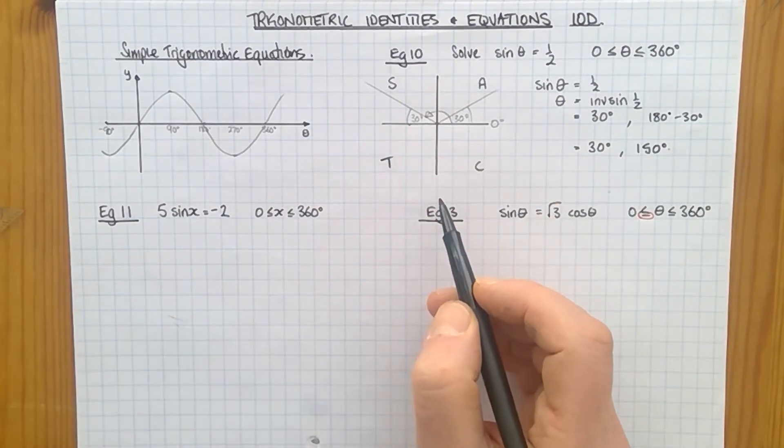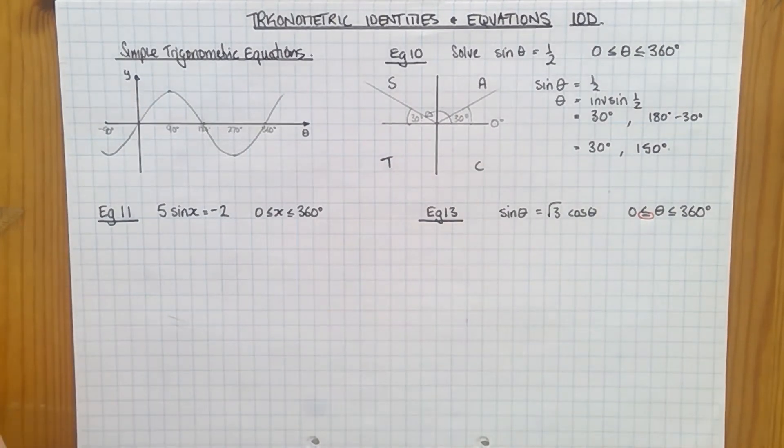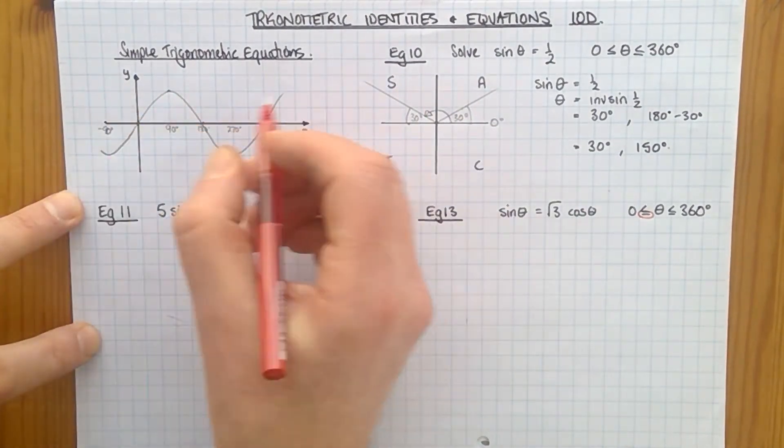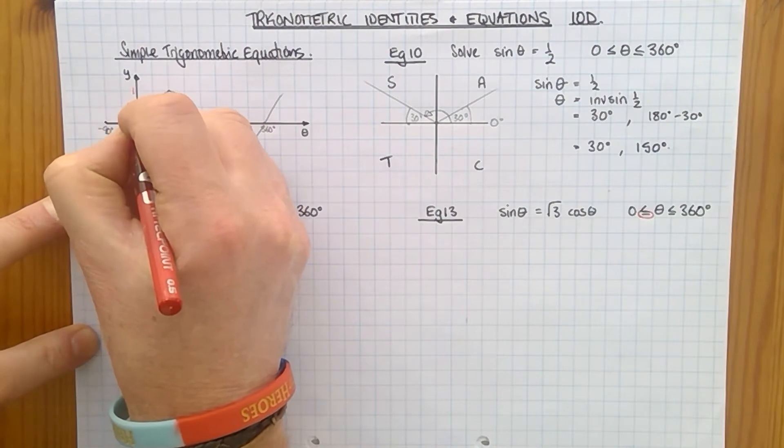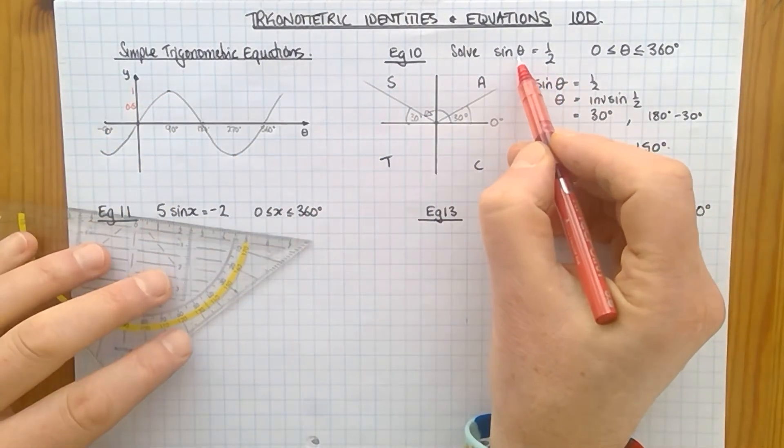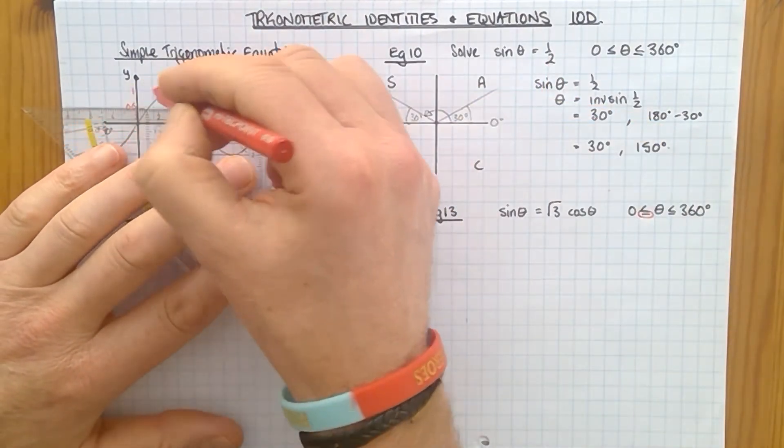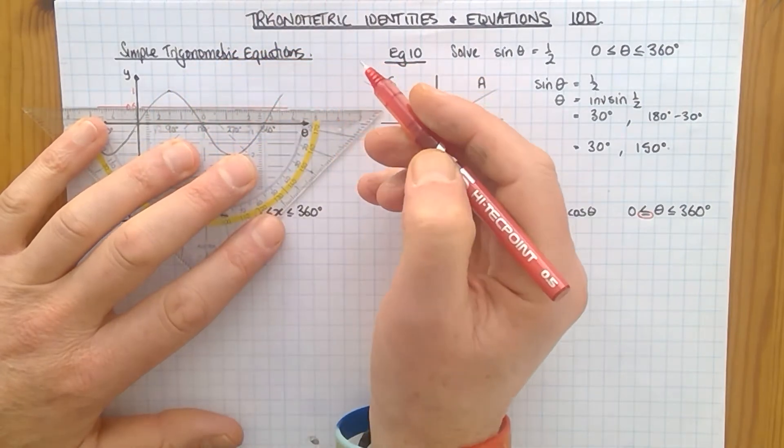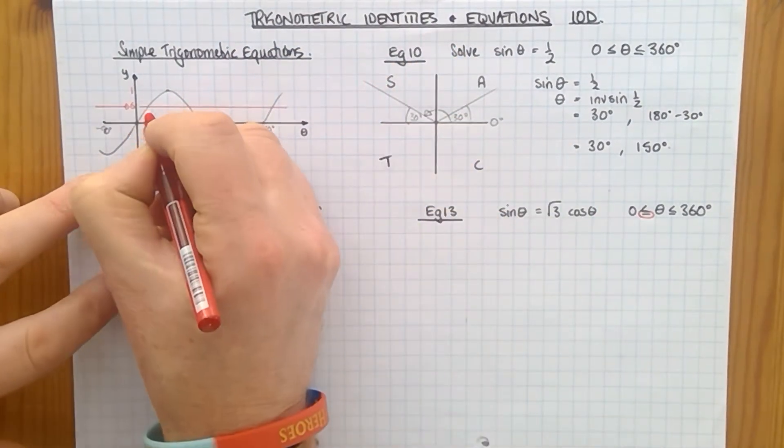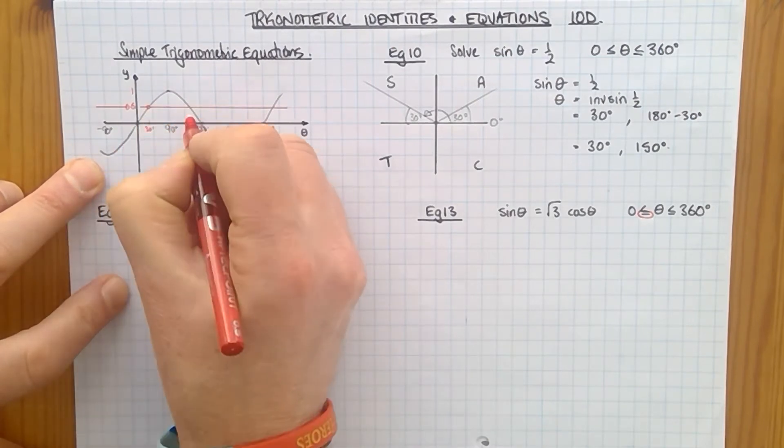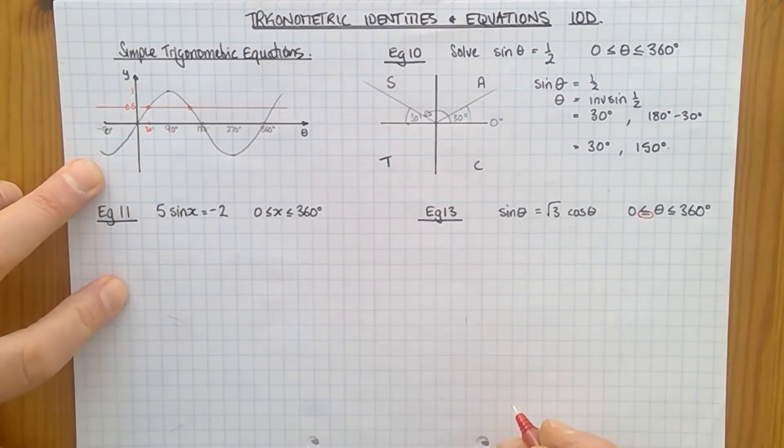That's how to work it out on the CAST diagram. You can also do it on a graph. So here's our sine curve. This is obviously a value of one, a value of a half would be there. So let's work out where sine theta is a half. I'm just going to draw a line like that. It crosses here. That was our primary value. We know that that is 30.